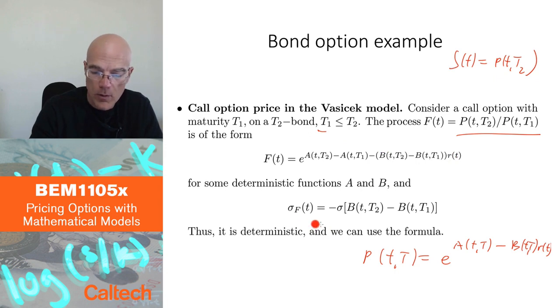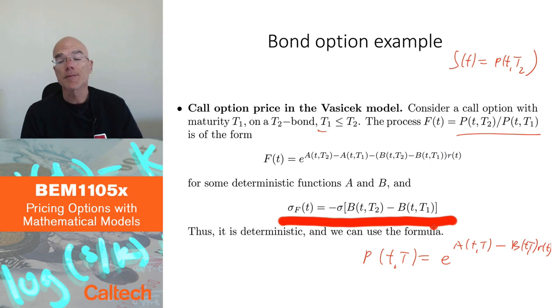You can do Ito's rule, or hopefully I convinced you, this is what happens. The volatility of this ratio is just this part, which is minus B(T,T2) minus B(T,T1) times volatility of R, which is sigma. But this is deterministic. And therefore, I can use the previous formula.